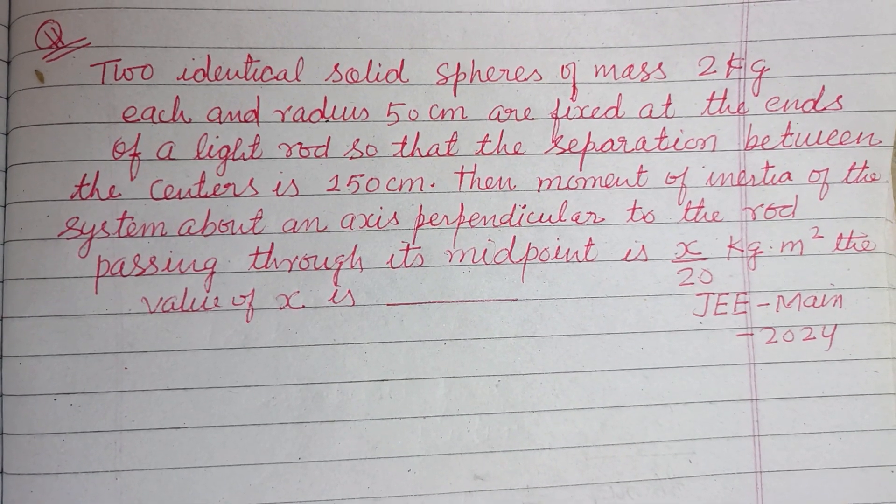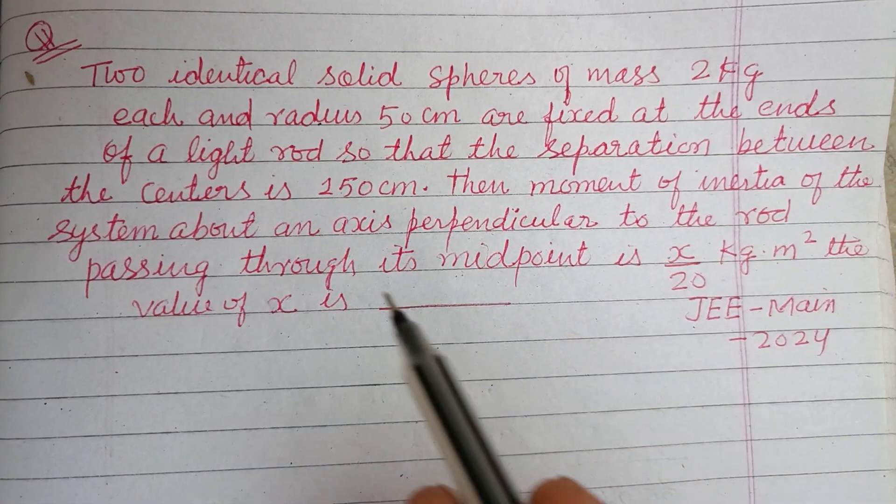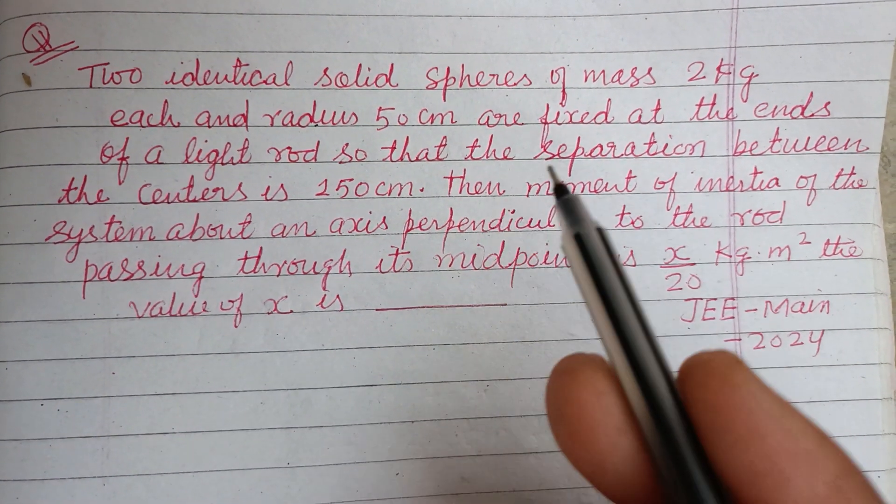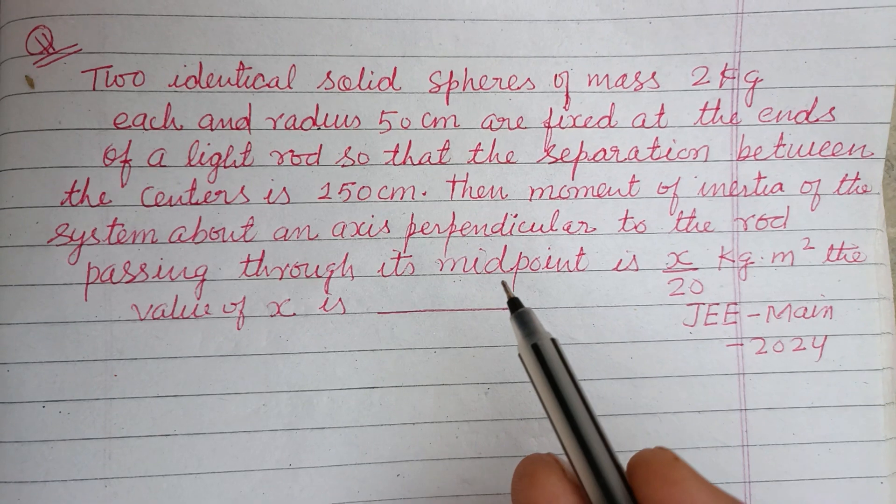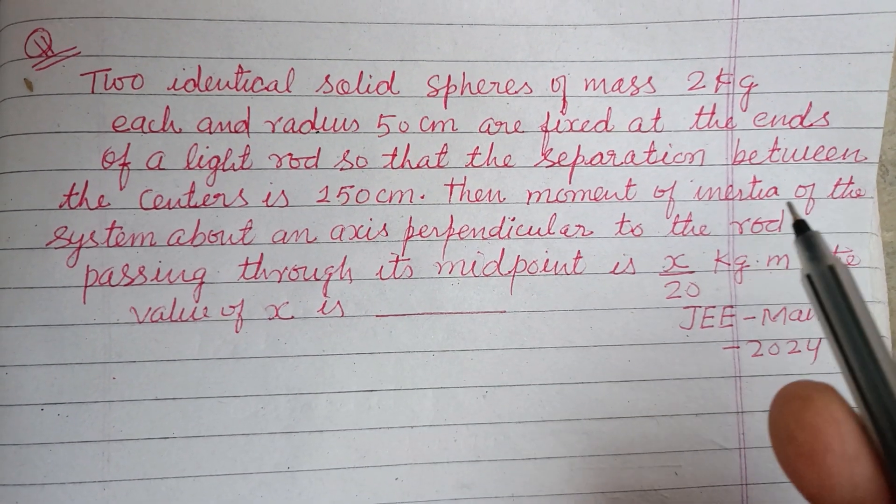Hello viewers, warm welcome to this YouTube channel. This is a question from JEE Main 2024. Two identical solid spheres of mass 2 kilograms each and radius 50 centimeters are fixed at the ends of a light rod.